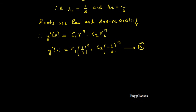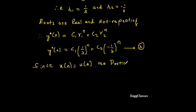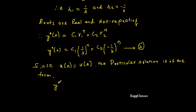Now we need the particular solution. Since x[n] = u[n], which is a constant input, the particular solution is of the form y_p[n] = K·u[n]. Call this equation 4.